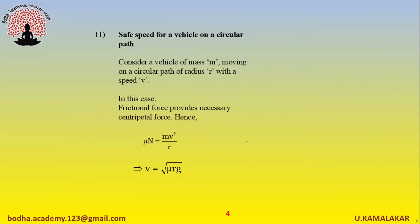Consider a vehicle of mass m moving on a circular path of radius r with speed v. In this case, frictional force provides the necessary centripetal force. Hence the safe speed for a vehicle on a circular path is given as: v equals the square root of (mu times r times g).